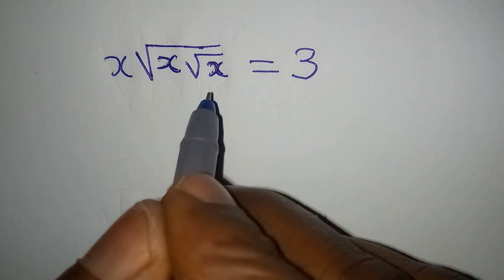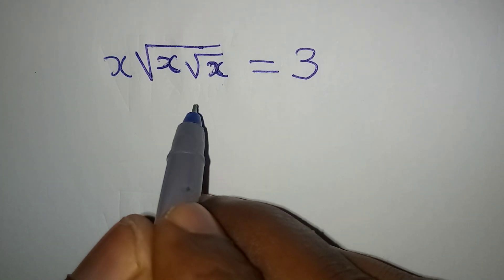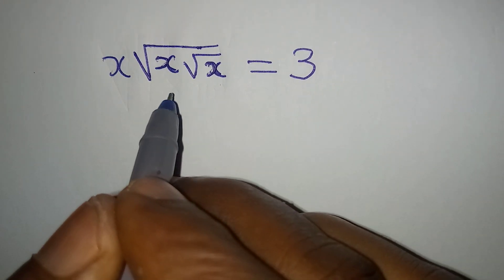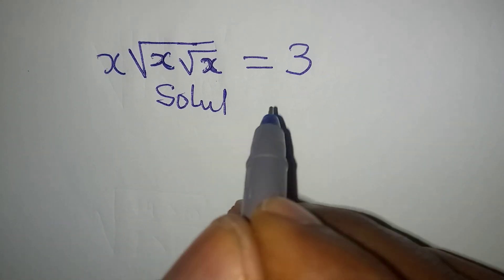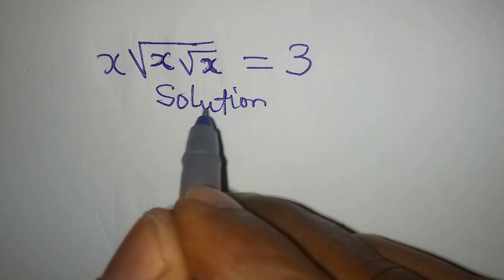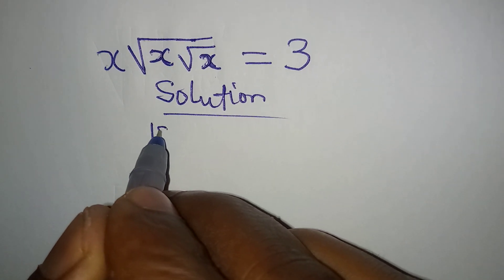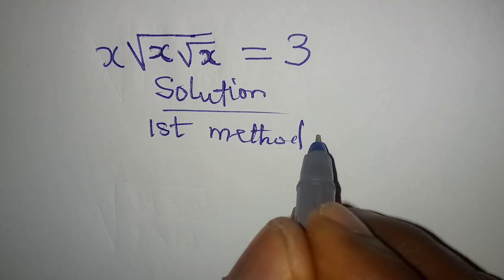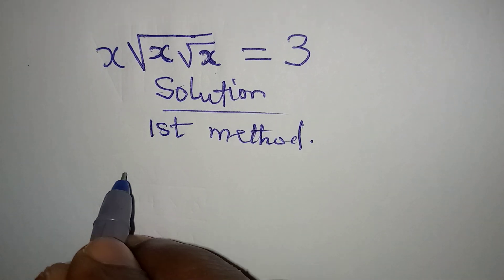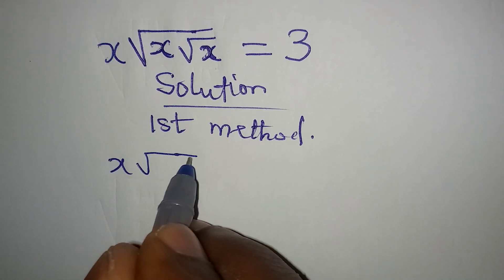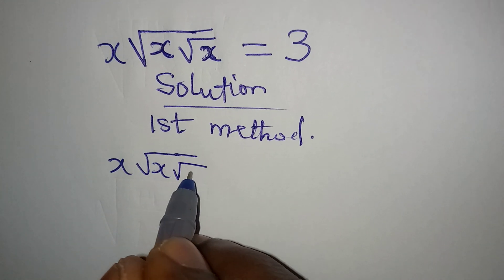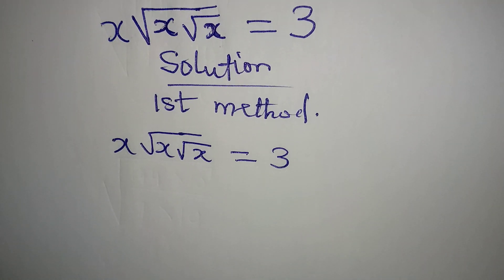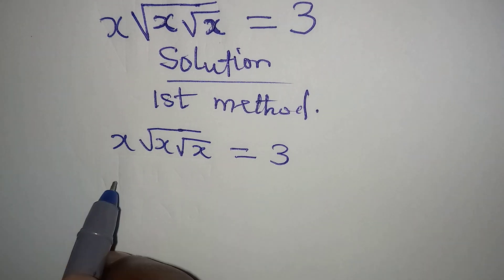Hello everyone, let's solve this surd equation very quickly. Do you know how to deal with this? I'm going to solve this in two ways. The first method: we have x times the square root of x times the square root of the square root of x, being equal to 3.